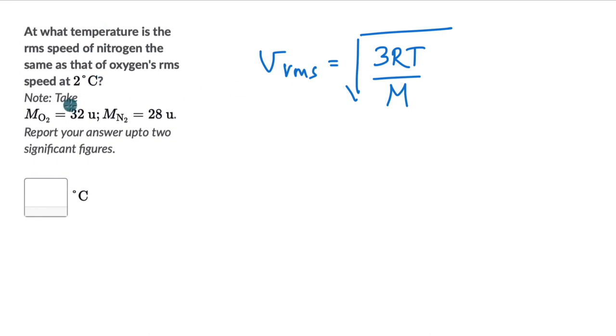And in the question we are given that the RMS speed of nitrogen, so let's write V_RMS N₂, this is equal to the RMS speed of oxygen at 2 degrees Celsius.